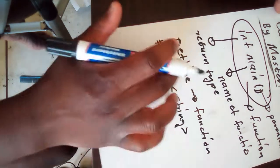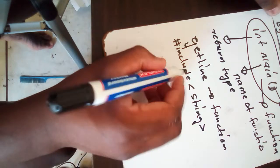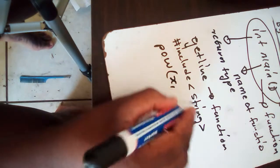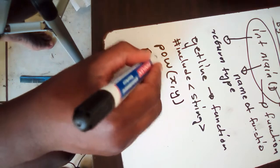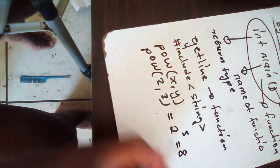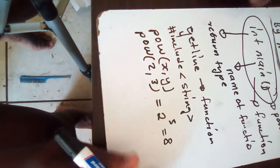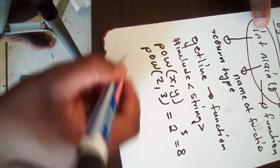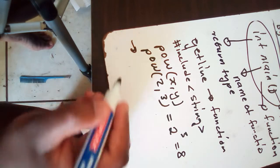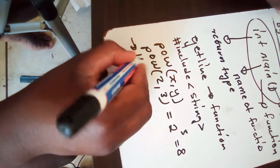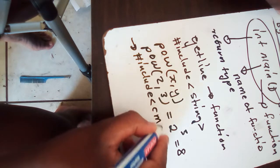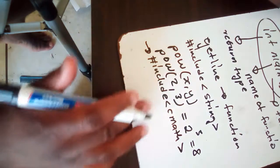We also have something like power. Sometimes you normally see it when it's written power x, y. For example, if I say power 2, 3, this is the same as 2 to the power 3, which gives us 8. This is also a function, but in order for this kind of function to work, you need to have a header file called hash include cmath.